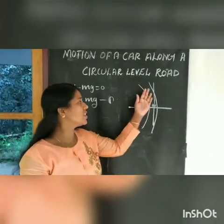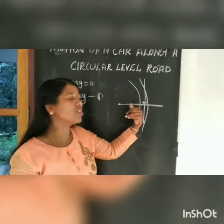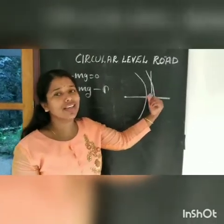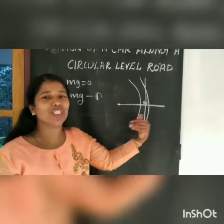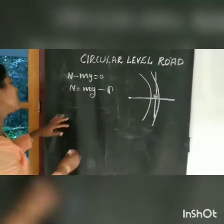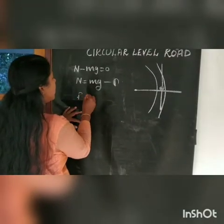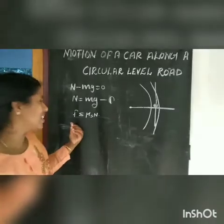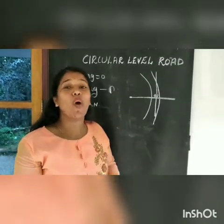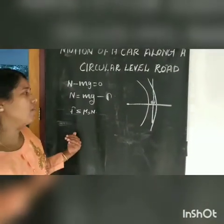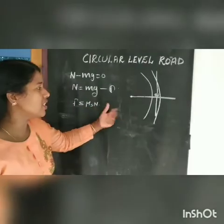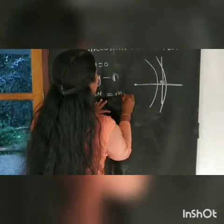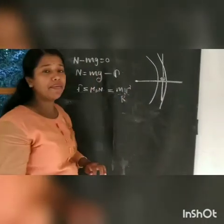In the horizontal case, two forces are acting. First is the frictional force — friction between the tyre and the road — which is static friction: F is less than or equal to mu_s times N. Second is centripetal force, which equals Mv squared divided by R.